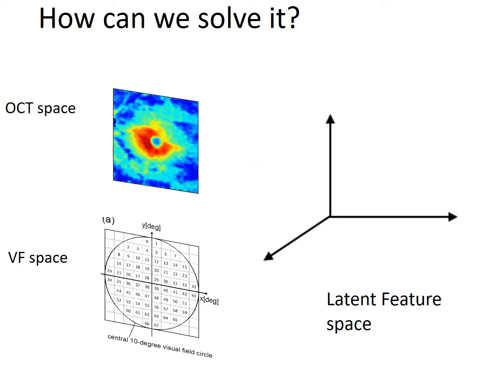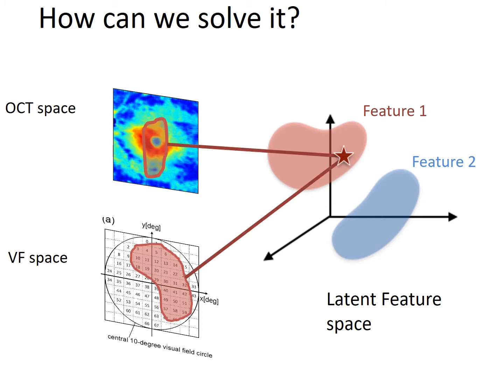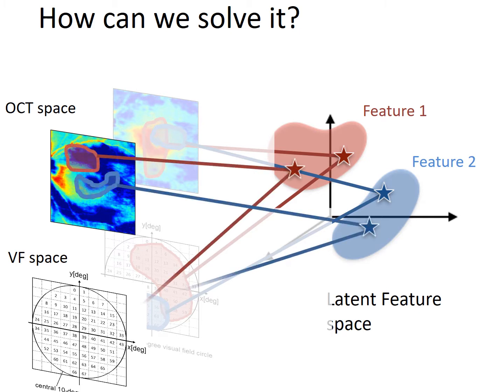How can we solve it? By finding an abstract latent feature space where essential information and disease manifestation is represented. Disease manifestation in both OCT and visual field domains can be simultaneously represented in this latent space. Therefore, a new OCT image can be transformed to a visual field via this latent space.